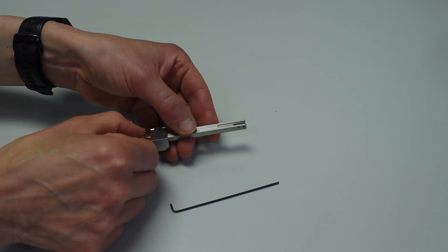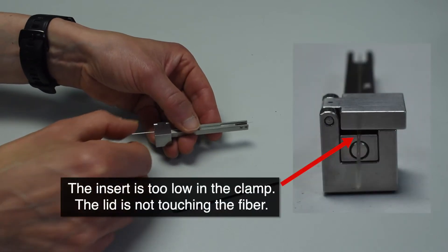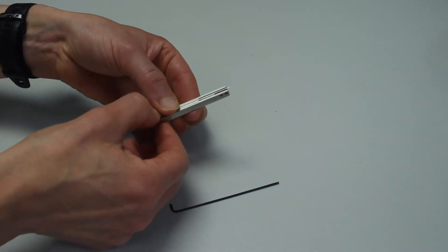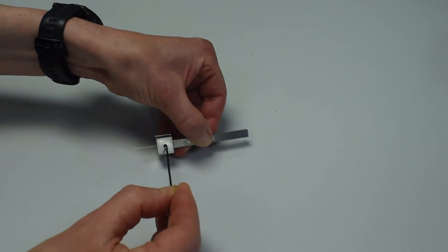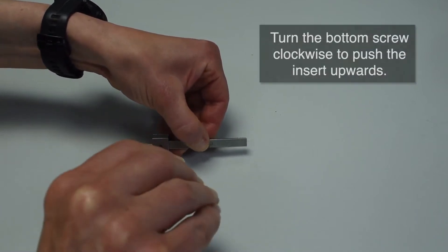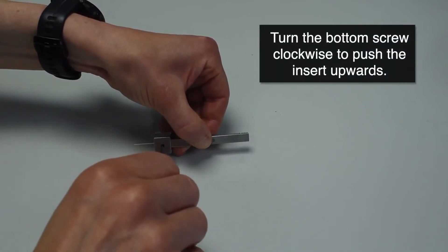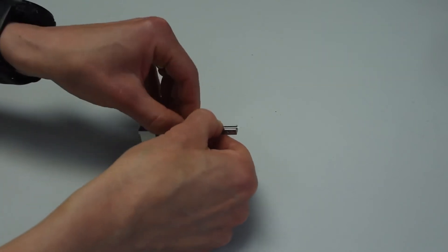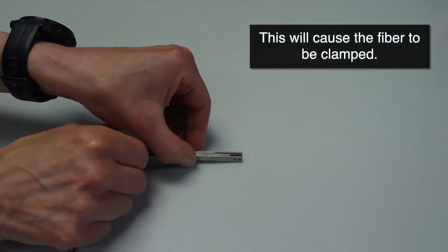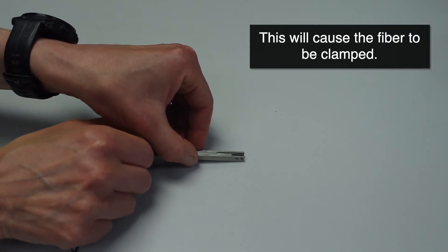This is because currently the insert is too low in the clamp and there is a large gap between the top of the fiber and the lid of the clamp. Holding the fiber securely in the groove, turn the insert over and turn the screw in the base of the clamp clockwise to raise the insert. The insert will eventually reach a height where the fiber will just start to touch the lid of the clamp and will be held firmly.